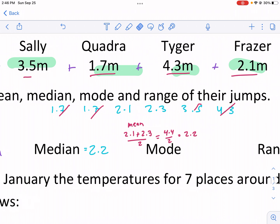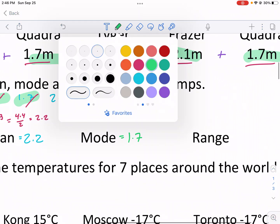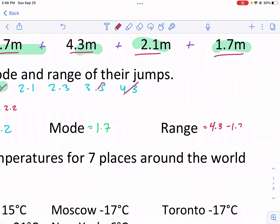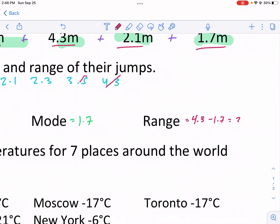Mode, let's take a look. This one's the easiest, I think. The mode, we have two 1.7s and no other numbers that appear more than once. So our mode is 1.7. In our range, we're going to take our max, that's our biggest number, minus our min. So 4.3 minus 1.7, and we get 2.6. So that is our range.